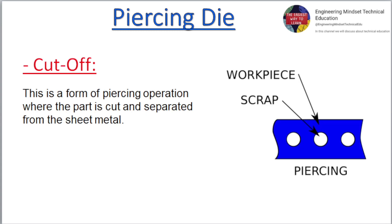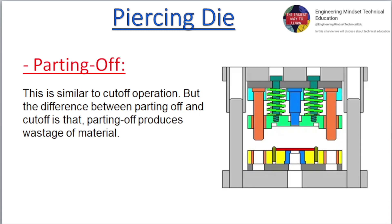Cut off is a form of piercing operation where the part is cut and separated from the sheet metal. Parting off is similar to the cut off operation, but the difference between parting off and cut off is that parting off produces wastage of material.